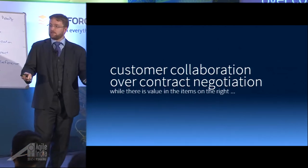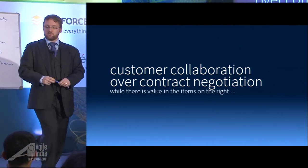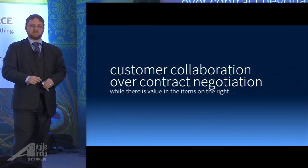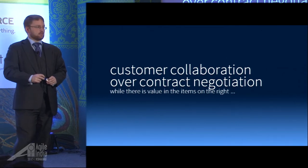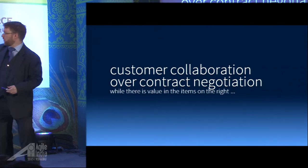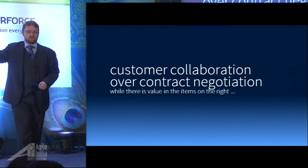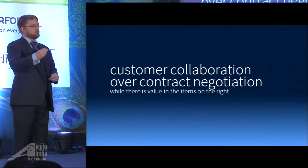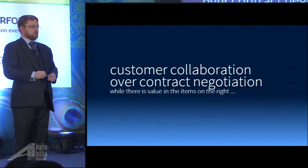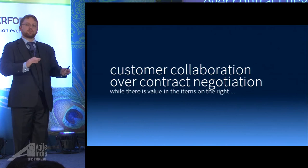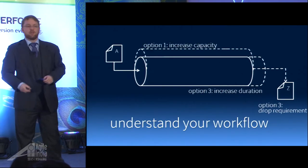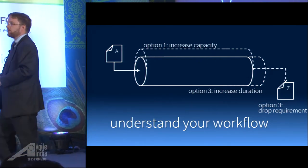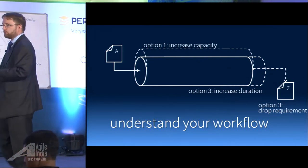Agile manifesto: customer collaboration over contract negotiation. Do we understand what that means? If we have a contract with our partner — yes, there is still value in that contract, but we want to be able to have that customer collaboration in place. So understand your workflow: understand the flow of activities, the flow of information, and the flow of requirements that go through from a contractual perspective.